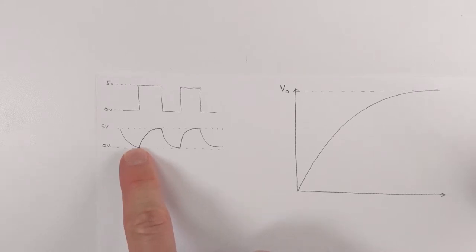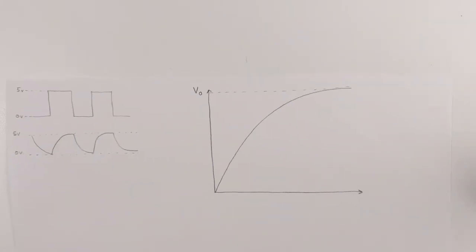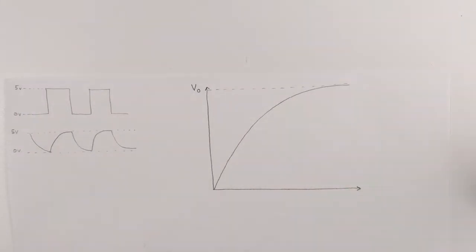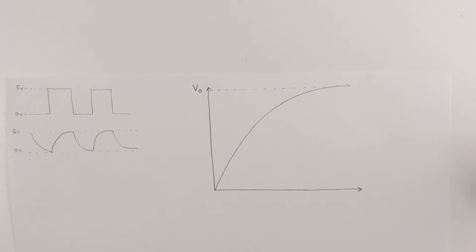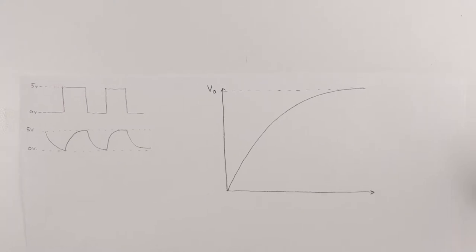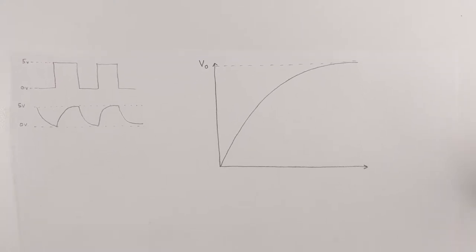You can see that when the square wave goes high, the capacitor starts to charge. When the square wave goes low, you can see it discharges. And so today we're going to be looking at just a charging cycle of the capacitor, and we're going to figure out what the value of it is. So let me show you what my oscilloscope looks like.